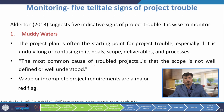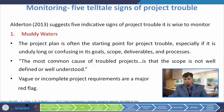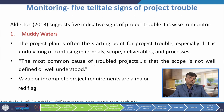Now we will discuss five signs of a project in trouble, as proposed by Alderton. The first sign is muddy water. The project plan is often the starting point for project trouble, especially if it is unduly long or confusing in its goals, scope, deliverables and processes. The most common cause of troubled projects is that scope is not well defined or well understood. Weak or incomplete project requirements are a major red flag.